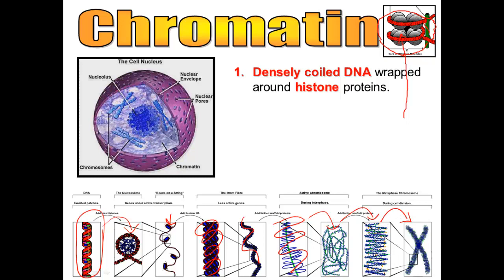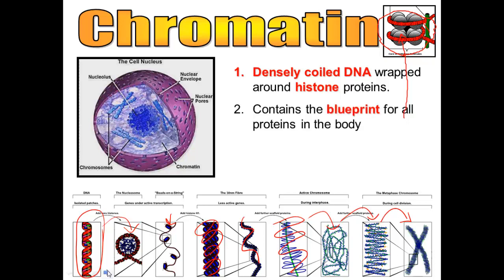Ultimately you end up with this X-shaped chromosome during mitosis, which you'll recognize when you think of DNA. DNA's job is that it contains the blueprint for all of the proteins in your body — what color your eyes are going to be, how curly your hair is going to be, all of the enzymes that you need to digest your food, and hormones like insulin that you need to store your sugar.